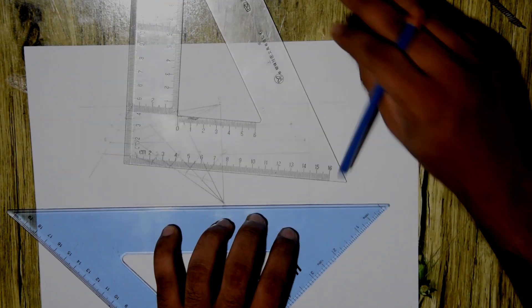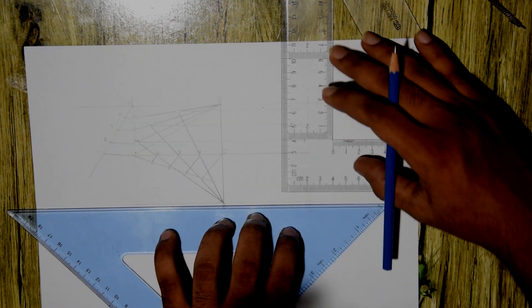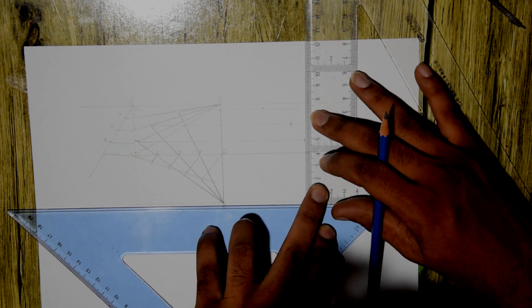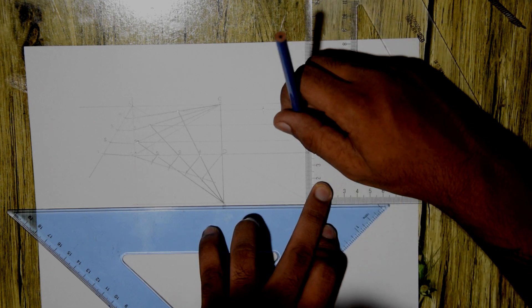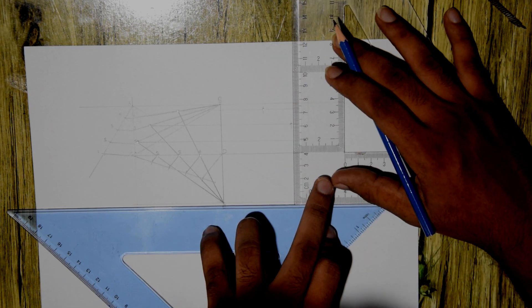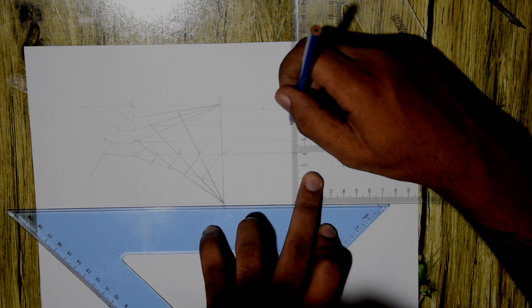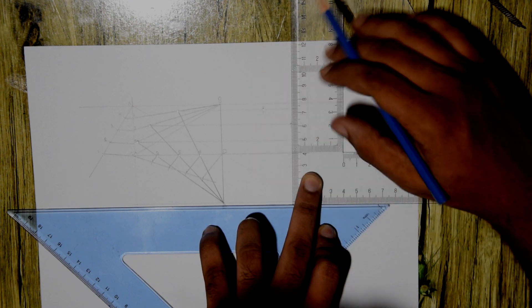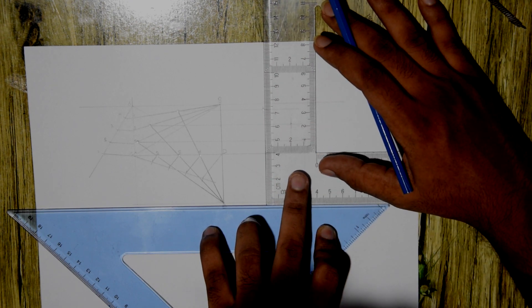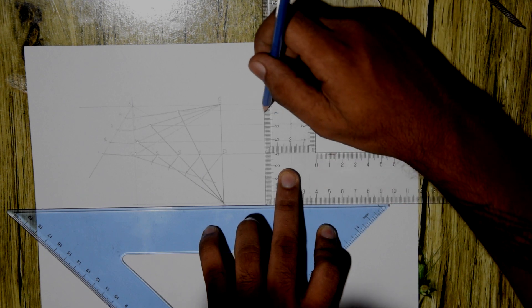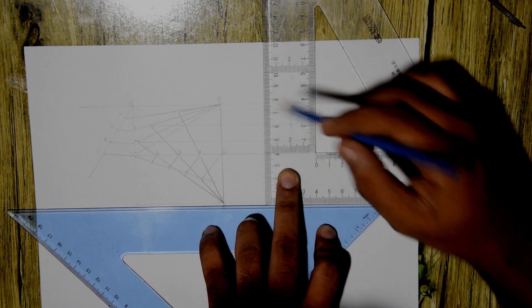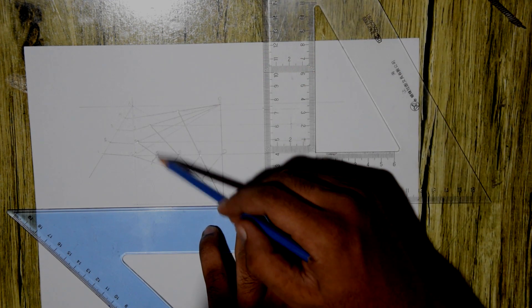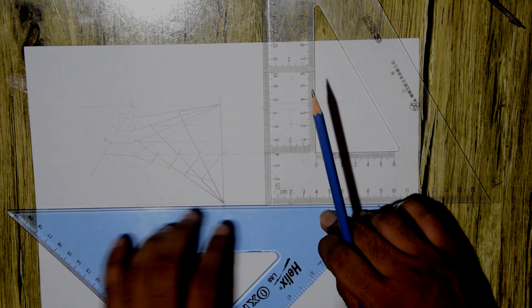Use your set squares to draw the vertical lines from the coordinates. Let's do the same thing in the last quadrant as well.